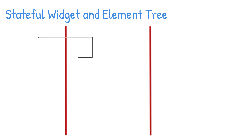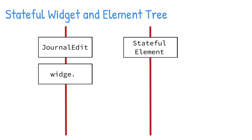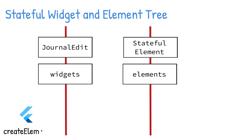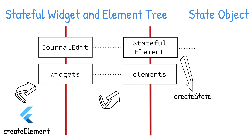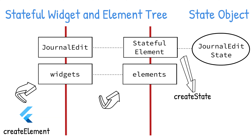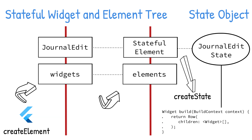A stateful widget has the configuration to create a stateful element. The Flutter framework calls the createElement method to create the stateful element, and the stateful element is mounted to the element tree. Since this is a stateful widget, the stateful element requests that the widget create a state object by calling the stateful widget class's createState method. The stateful element now has a reference to the state object and the widget at a given location in the element tree. The stateful element calls the state object's build method to check for child widgets, and each child widget creates its own element and is mounted to the element tree. This process results in two trees: the widget tree and the element tree.